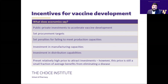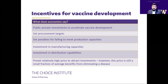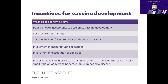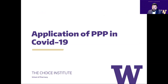Economic theory also addresses many other aspects of vaccine development and distribution, making key recommendations: there should be public-private investment to accelerate vaccine development; government should procure targets to guarantee demand; it should set a penalty for failing to meet production capacities; it should invest in manufacturing and distribution capacities; and it should pre-set prices, as discussed.